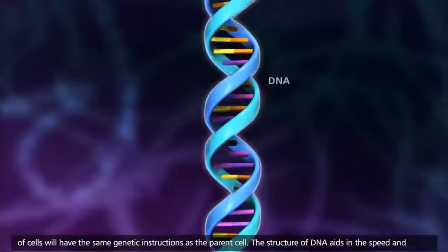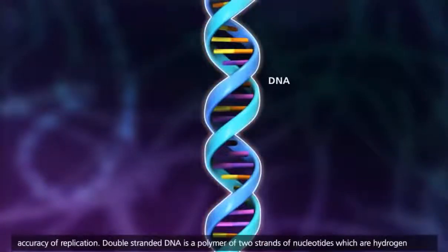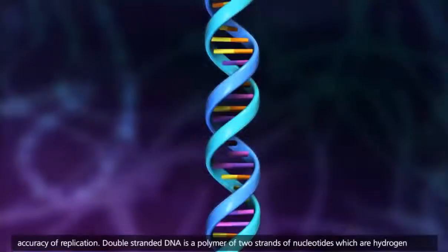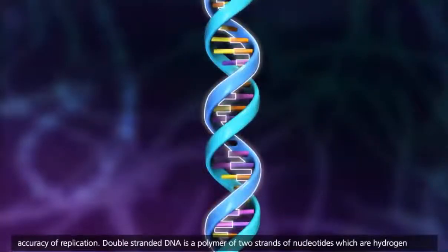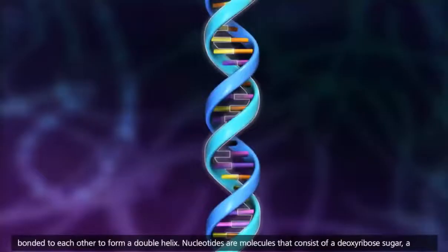The structure of DNA aids in the speed and accuracy of replication. Double-stranded DNA is a polymer of two strands of nucleotides, which are hydrogen bonded to each other to form a double helix.